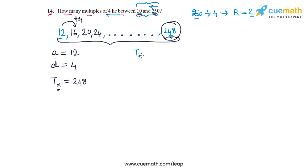So let's do that. Tn in terms of a and d, this will be equal to a plus n minus 1 times d. Let's plug in the values. So Tn is 248, a is equal to 12, and d is equal to 4. So we get 12 plus 4 times n minus 1.